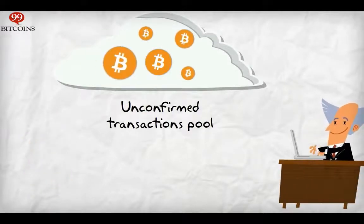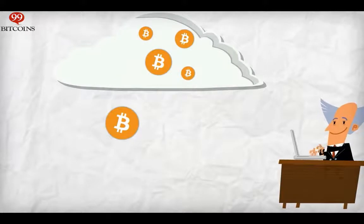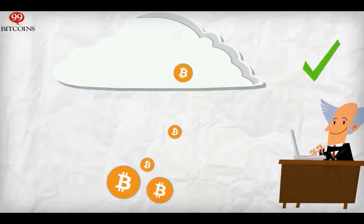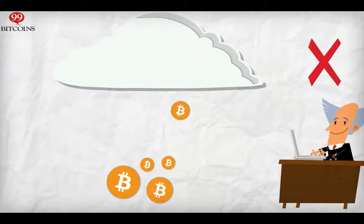Miners entered the unconfirmed transactions pool, took this transaction and others like it, verified they were valid—meaning I actually have the one Bitcoin to spend—and group them into a block.